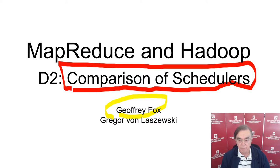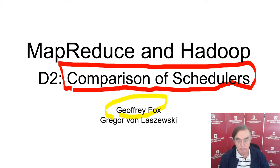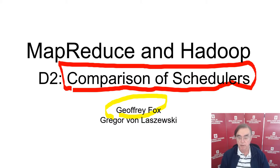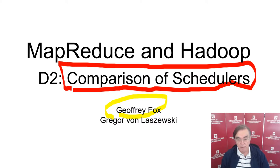Scheduling is a very well-studied area, probably not so hot at the moment, although possibly one of the biggest trends right now is the importance of Kubernetes, and that is a resource manager and scheduler.